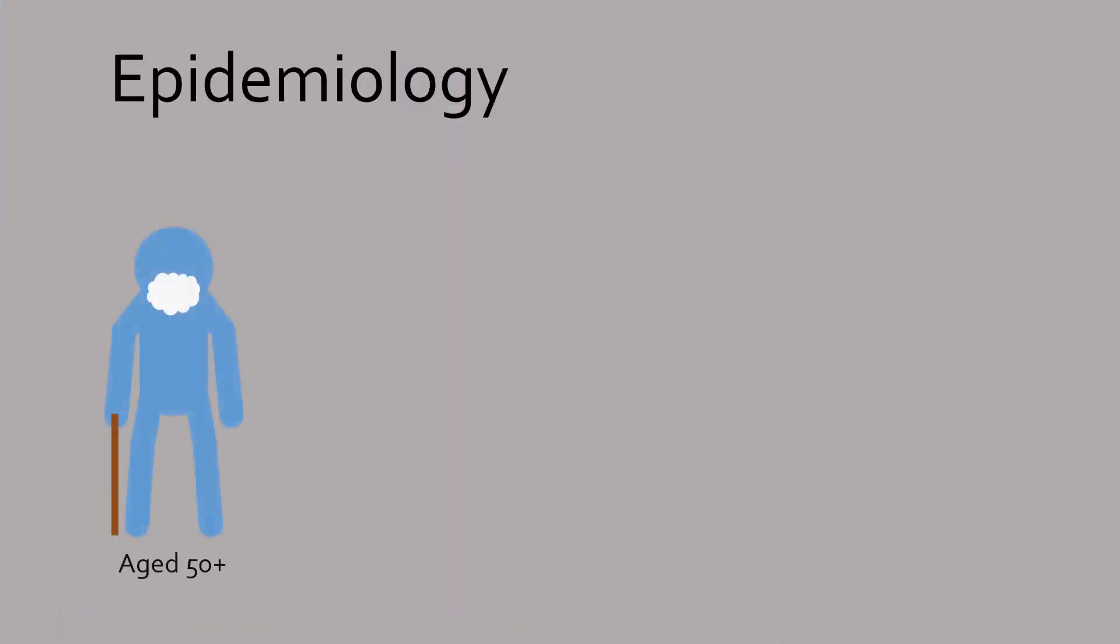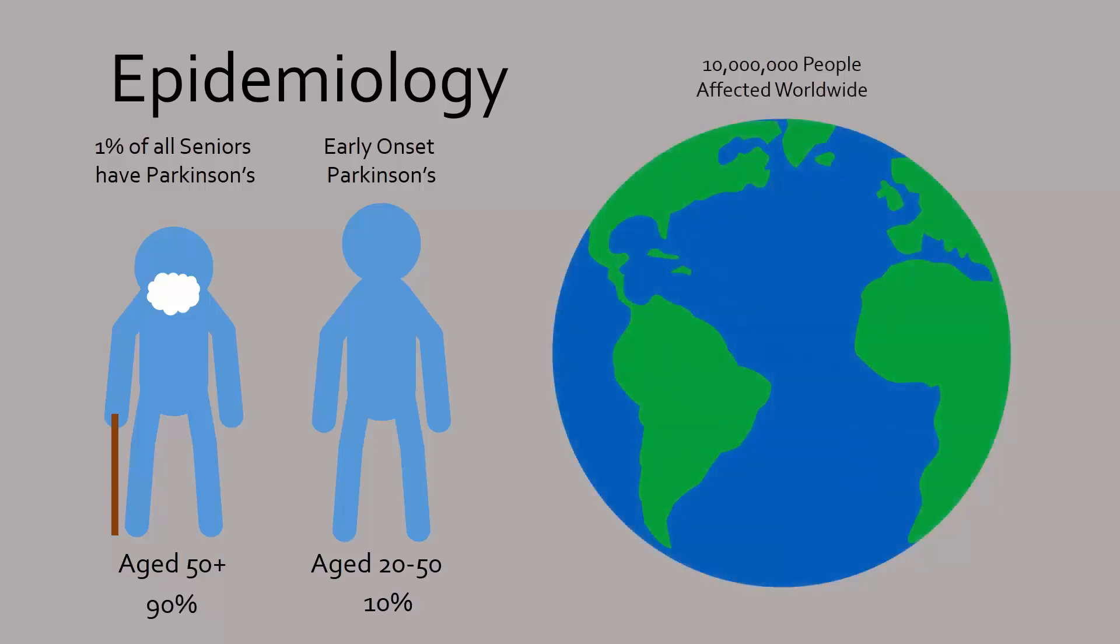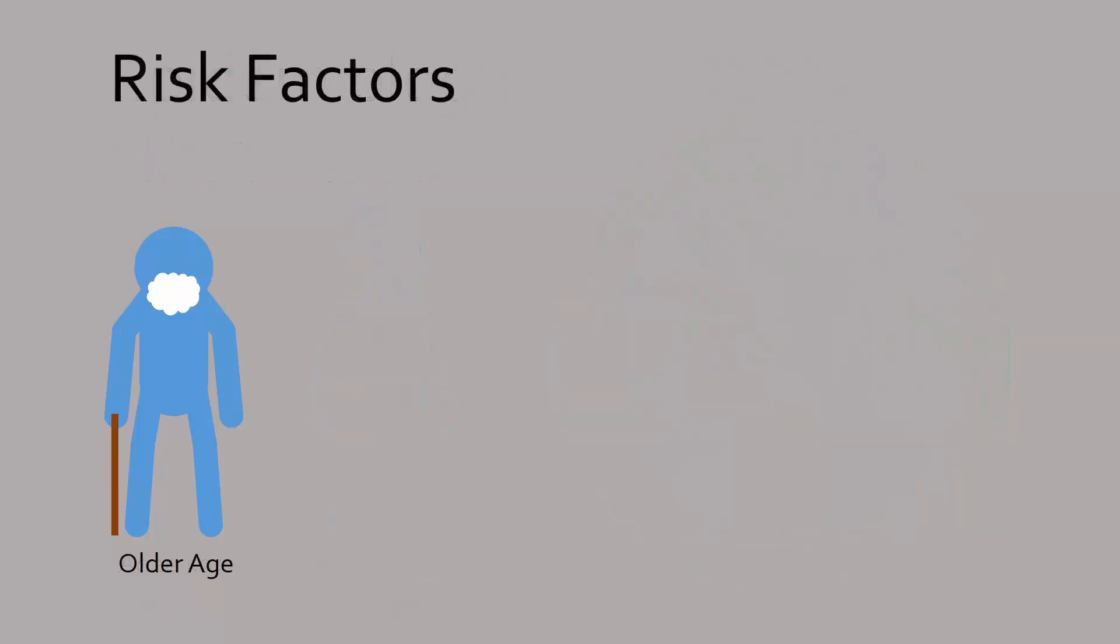Parkinson's mostly affects the elderly aged 50 or older, with approximately 1% of all seniors having this disease. Approximately 10% of cases develop before age 50, known as early onset Parkinson's. Around 10 million people are affected worldwide, with men almost 50% more likely to be affected than women.